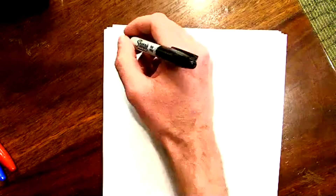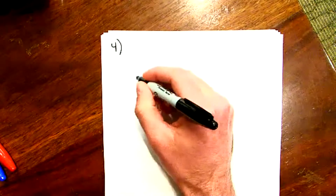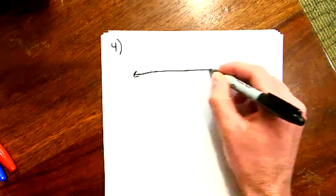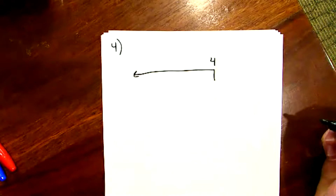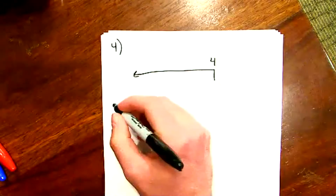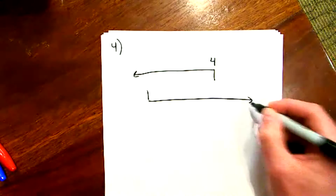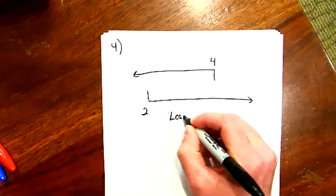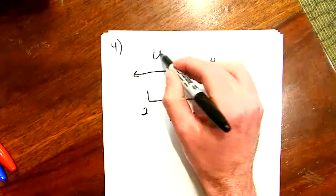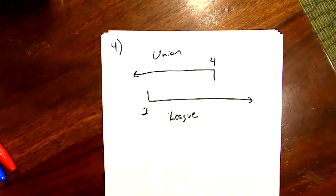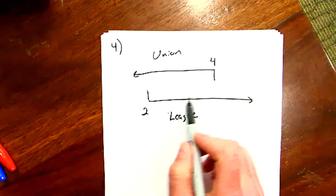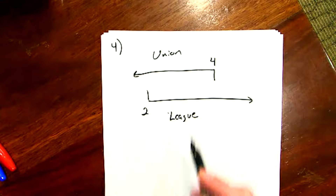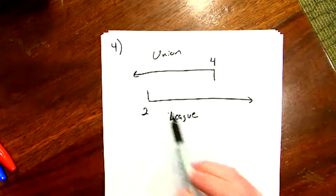So the union's threat point is four and the league's threat point is two. Without the optimism, the number of games they'd agree on would be somewhere in the range of two to four — since this isn't continuous, it would be either two, three, or four.